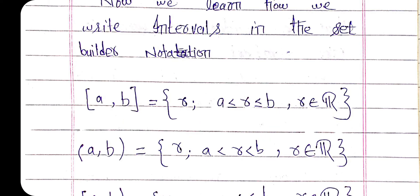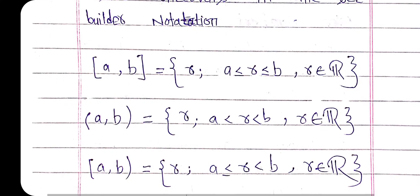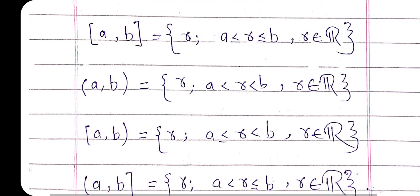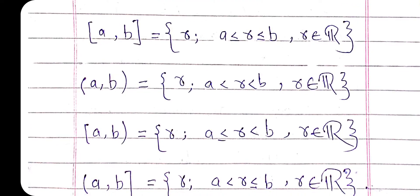Next we move towards the set-builder notation of the semi-open interval. In this case, for the interval closed on the left and open on the right, r belongs to the real numbers such that r is greater than or equal to a and strictly less than b. The initial boundary point a is included and the terminal boundary point b is not included.